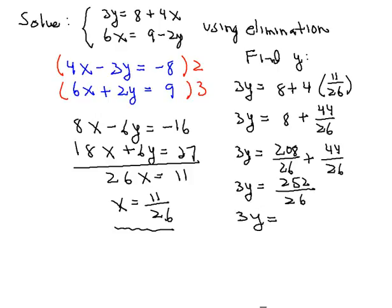We can reduce that to 126 all over 13 and then to finish up what we'll do is multiply each side by 1 third so we have y is equal to 1 third times 126 all over 13 and we can do a little reducing here. So 3 will divide into 126, 42 times. So then y will turn out to be equal to 42 all over 13.